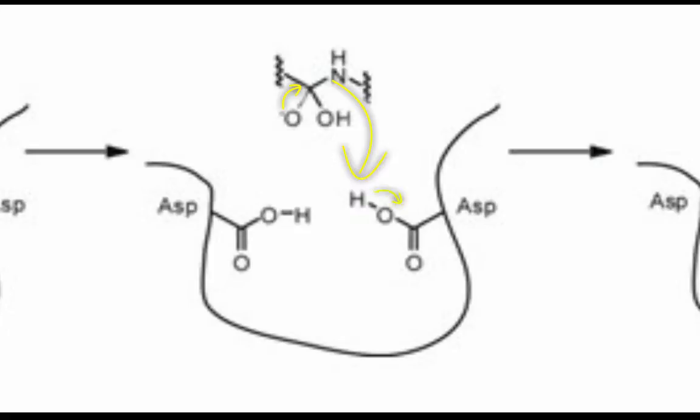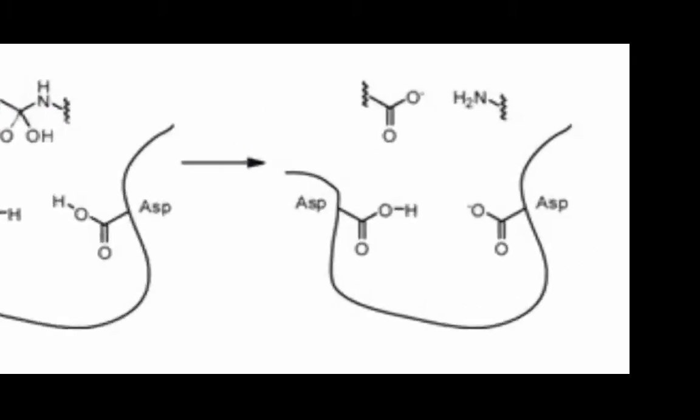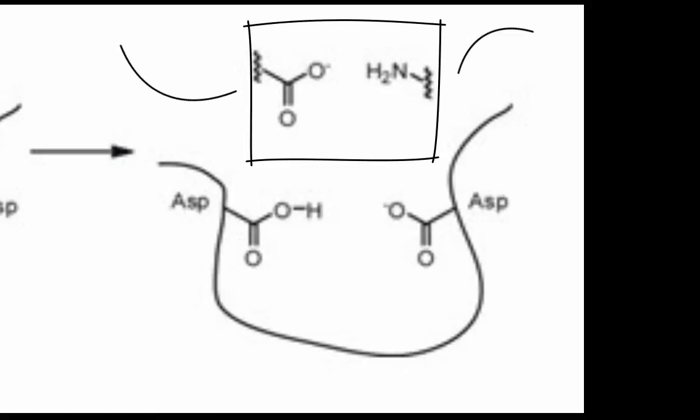The aspartic oxyanion is subsequently regenerated. Now, unlike the serine proteases that we discussed in class, no covalent bonds are formed between the beta secretase's side chains and the substrate. For this reason, the fragments can exit the active site freely.